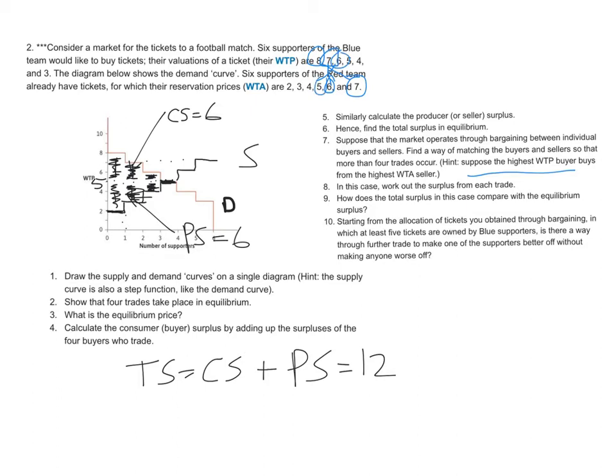So all six trades could take place in that scenario. And notice that when we ask how does total surplus compare with equilibrium, notice that each of those trades produced one dollar in total surplus. Eight minus seven is one. Seven minus six is one. Six minus five.